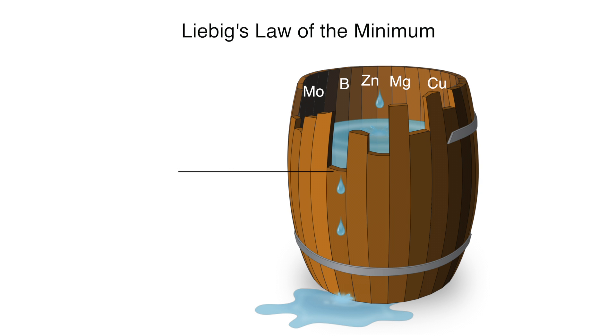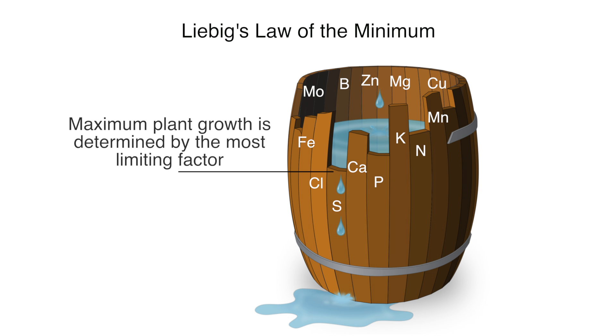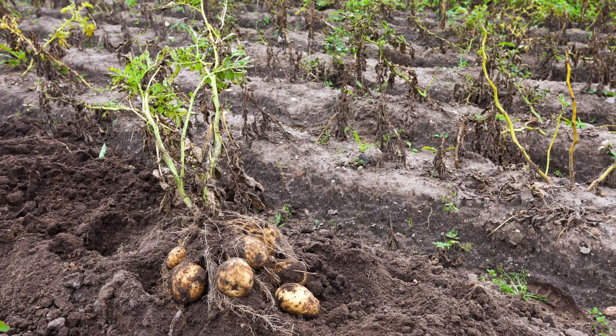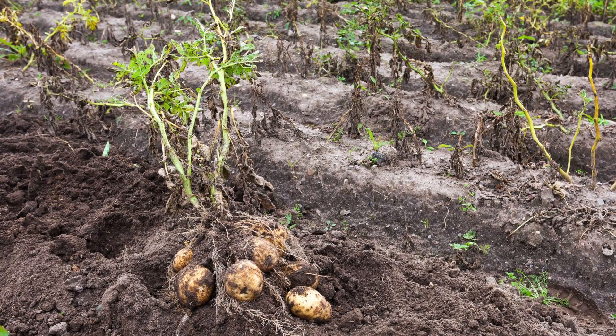Nevertheless, no matter where a nutrient comes from or how much nutrient is required by a plant, all of these nutrients are essential for plant growth. So how do plants acquire these nutrients?